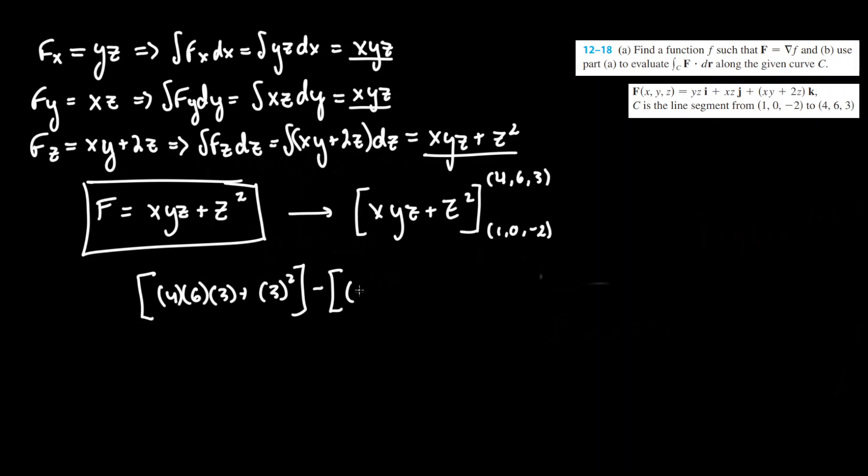The lower component would be (1, 0, -2) plus (-2) squared. Evaluating that, we get 4 times 6 times 3, so 4 times 3 is 12 times 6 is 72, plus 3 squared which is 9.